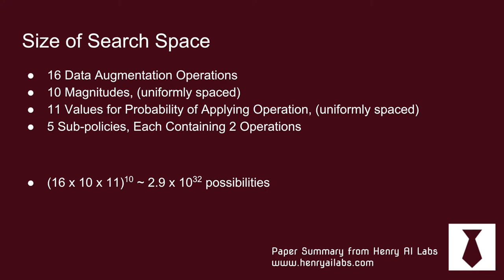Then they have 11 values for probabilities of applying the operation. They have five sub-policies, and each policy you sample has two operations that you might apply to the image. So it could be like rotate and also increase the brightness. With each of these operations, there's an additional parameter which is the magnitude of the brightness and the probability of actually applying it. You might only actually increase the brightness 50% of the time.